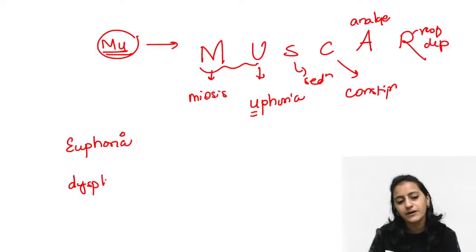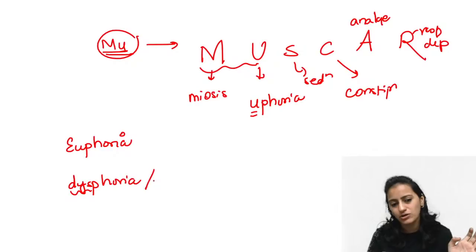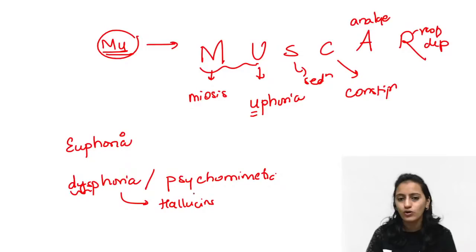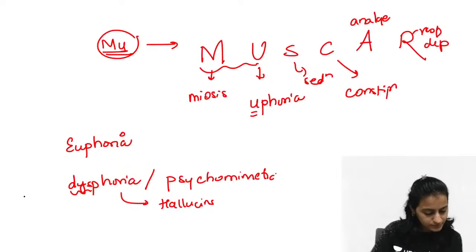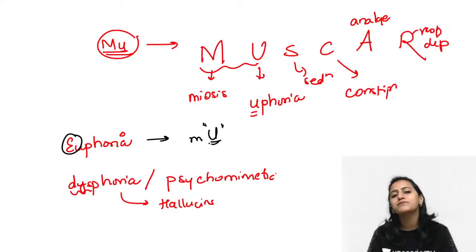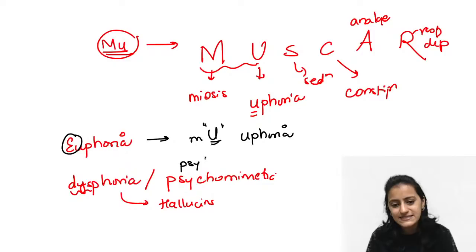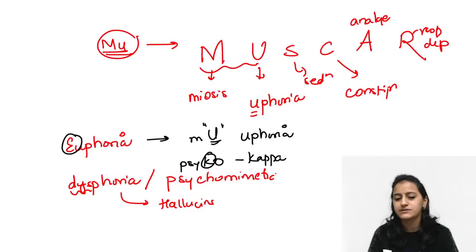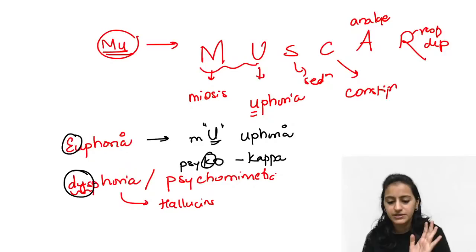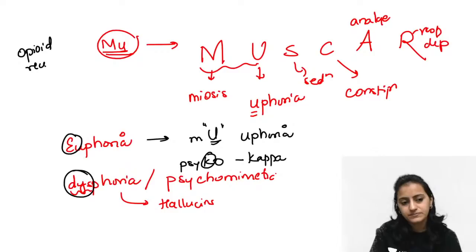Most important to distinguish: euphoria is mediated by mu receptors (M-U = euphoria), while dysphoria — abnormal psychomimetic effects like hallucinations and nightmares — is mediated by kappa receptors. Remember: psychomimetic starts with 'psycho' → kappa (K). Opioid receptors are G-protein coupled receptors. All receptors — mu, kappa, and delta — contribute to analgesia, both spinal and supraspinal.